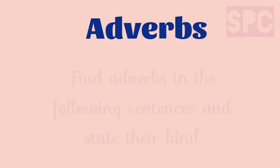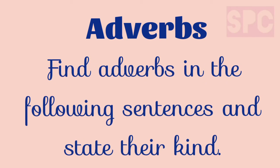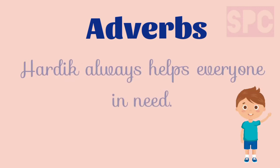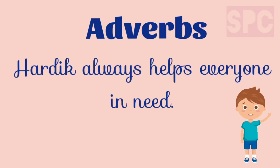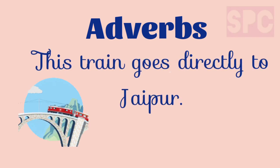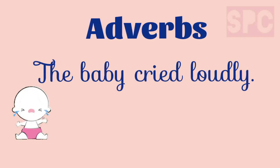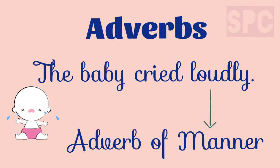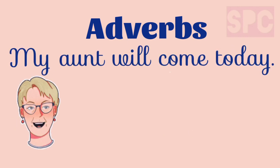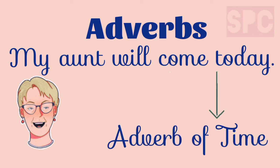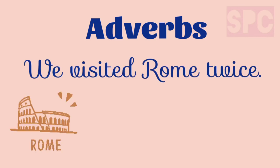We have understood everything about adverbs. Let's do an exercise in which we have to find the adverbs in the given sentences and state their kind. First sentence: Hardik always helps everyone in need. Second sentence: this train goes directly to Jaipur. Third sentence: the baby cried loudly. Fourth sentence: my aunt will come today. Fifth sentence: we visited Rome twice.